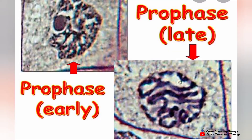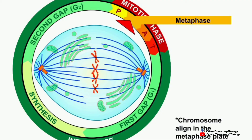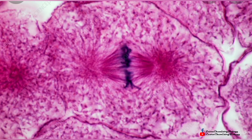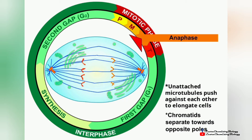The next step is metaphase. In metaphase, chromosomes align at the metaphase plate. You can see they have arranged themselves on the equator. This is the microscopic illustration of metaphase.